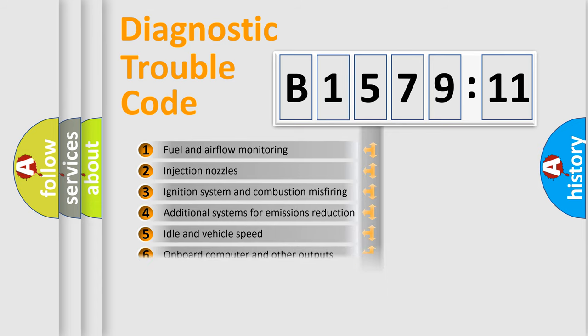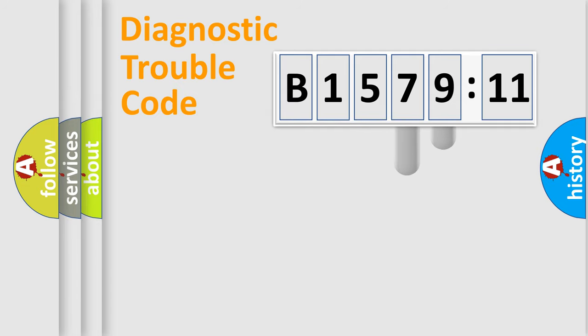The third character specifies a subset of errors. The distribution shown is valid only for the standardized DTC code. Only the last two characters define the specific fault of the group.